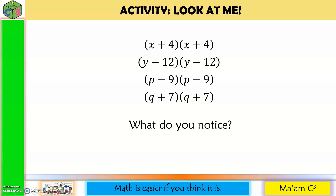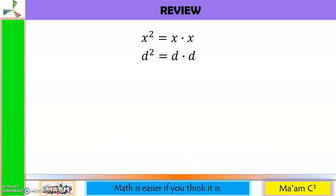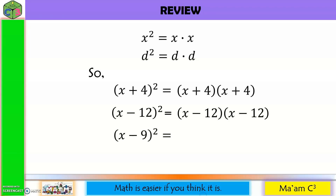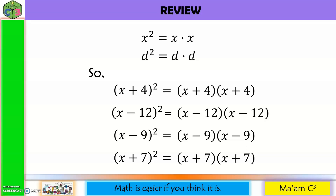What do you notice? The binomials are repeated twice. Now let's have a quick review. x squared equals x times x; d squared equals d times d. So quantity x plus 4 squared equals x plus 4 times x plus 4. Similarly, quantity x minus 12 squared equals x minus 12 times x minus 12. Quantity x minus 9 squared equals x minus 9 times x minus 9. And quantity x plus 7 squared equals x plus 7 times x plus 7.